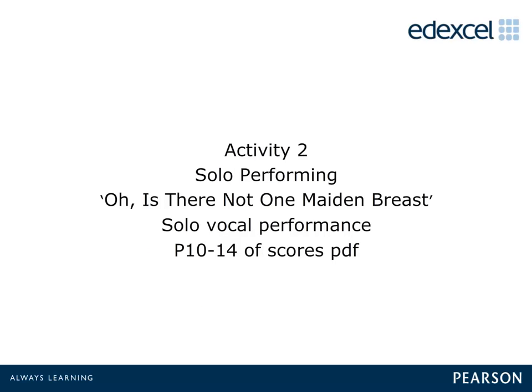The second solo performance is another vocal performance for comparison. Listen to '02 solo voice O is there not one maiden breast' MP3 and compare it to the score on pages 10–14 of the score PDF. Refer to page 29 of the specification to decide on the level of difficulty, then refer to page 16 for the solo performing mark grid. When you have decided on a raw mark, refer to page 15 to scale it according to the level of difficulty. Now pause the video and listen to the audio, and write some notes to remind you of your assessment.